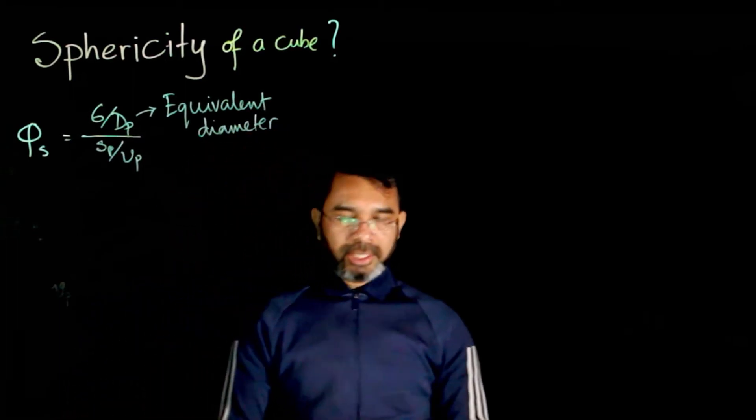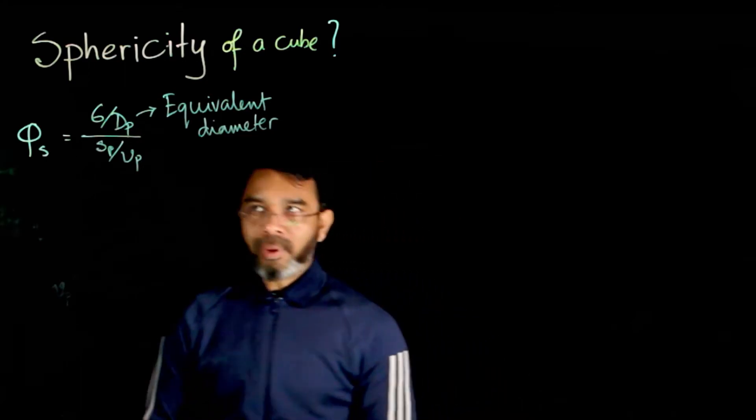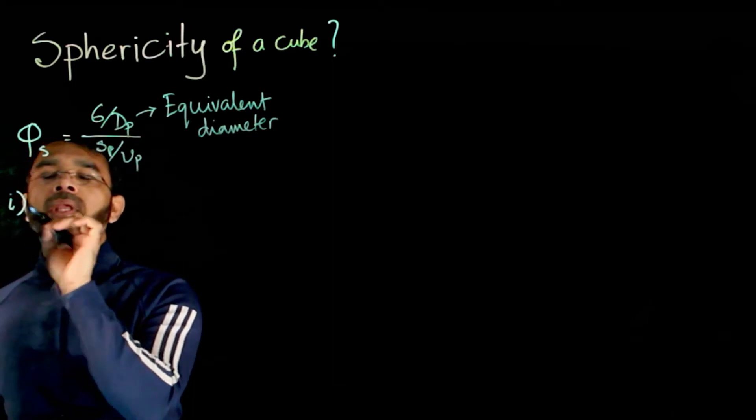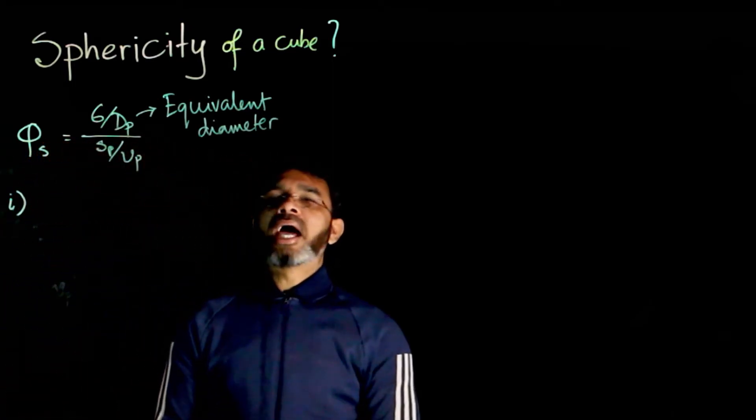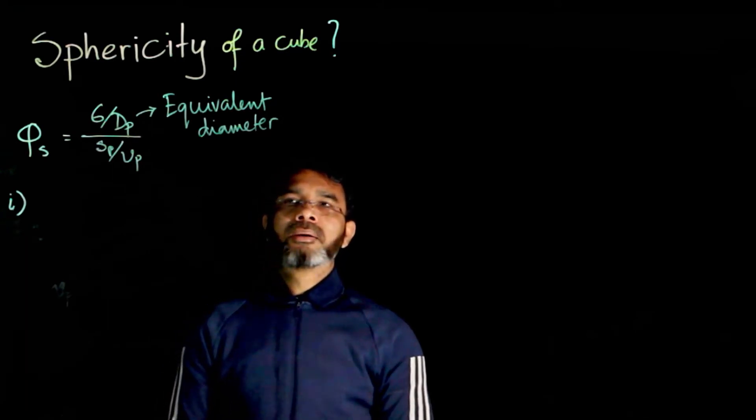As I mentioned, there are two ways to define the equivalent diameter for a cube. Number one is defining equivalent diameter as the diameter of a sphere having the same volume as the particle.